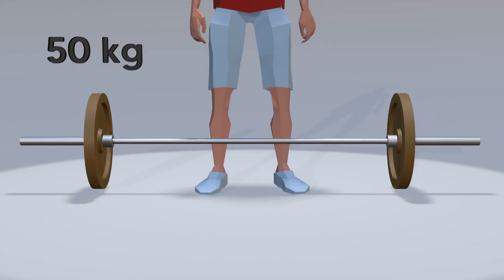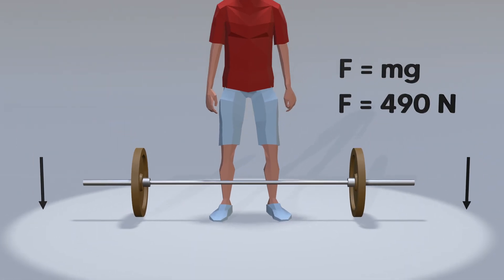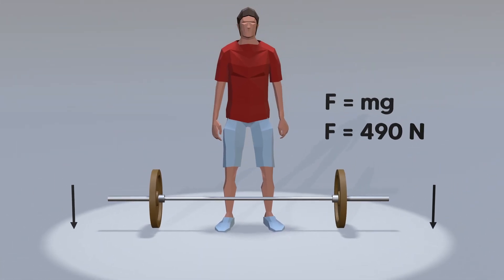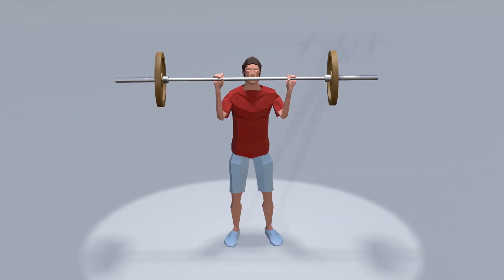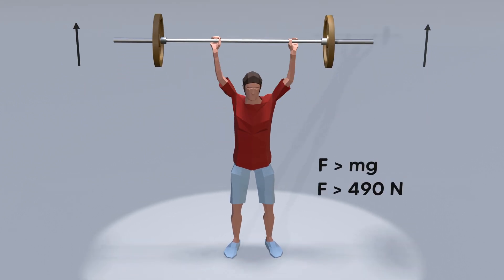The weight of the 50 kg barbell is equal to 490 N. To lift this barbell upwards, we need to apply a force greater than 490 N in the opposite direction of gravity.